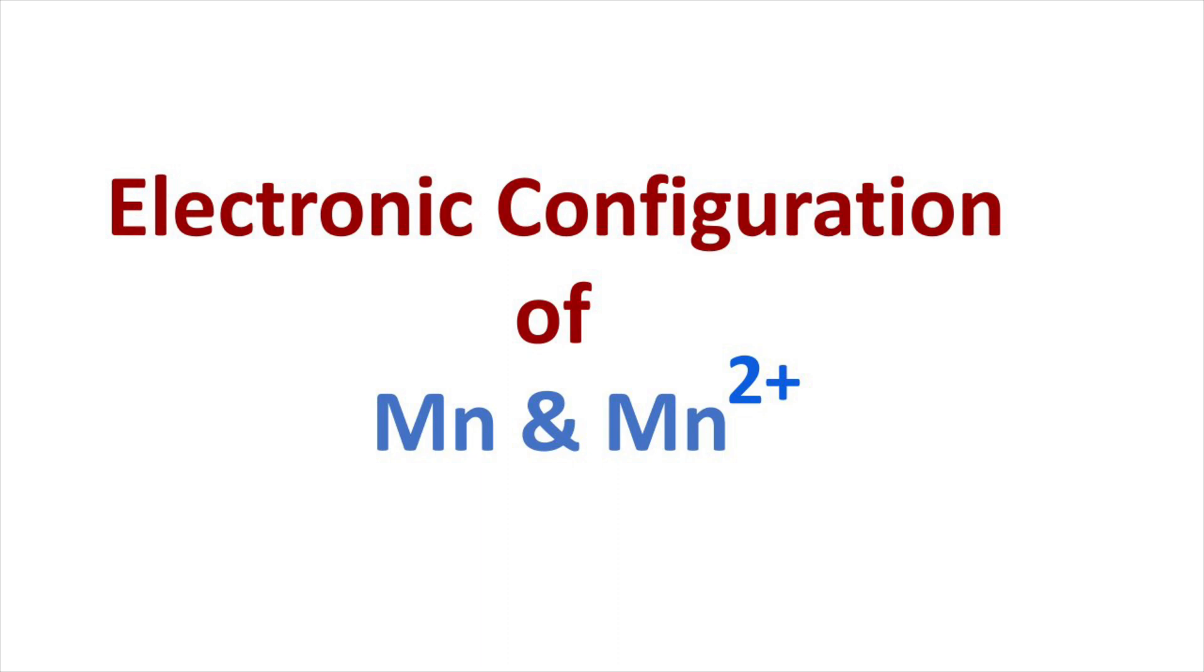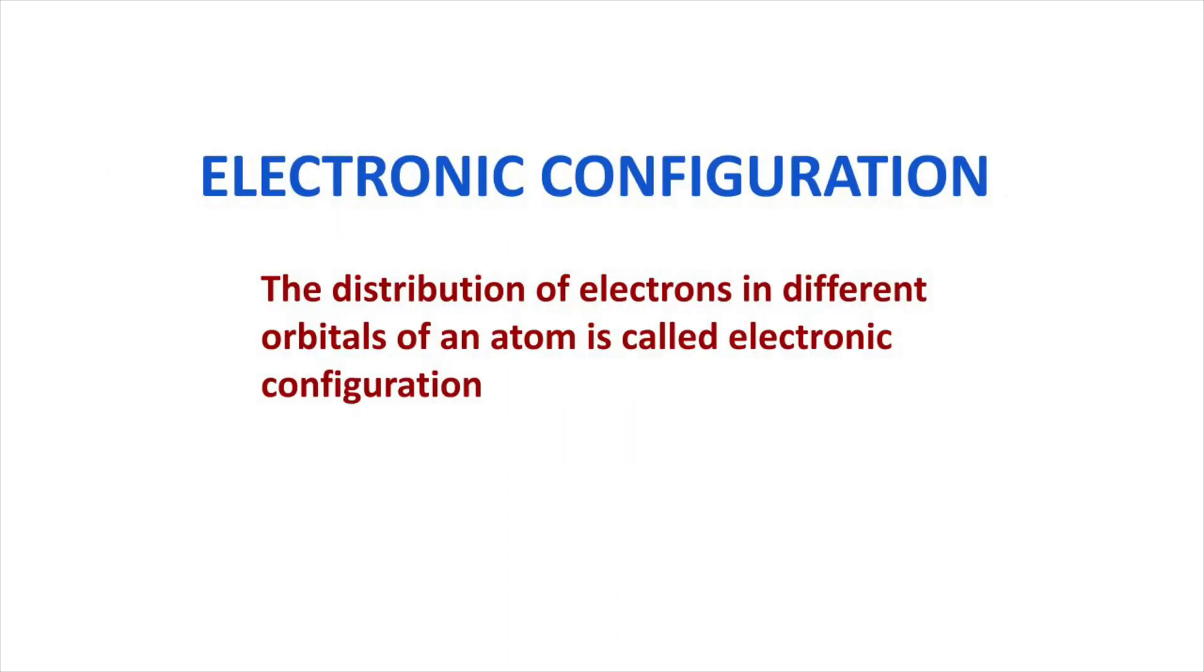Welcome to Aurora Chemistry for Everyone. We are here to discuss how to write electronic configuration of manganese and its ion Mn2+. The arrangement of electrons in different orbitals of an atom is called electronic configuration.